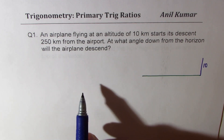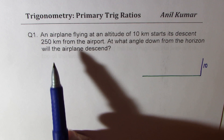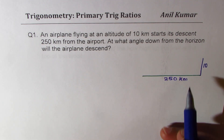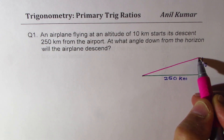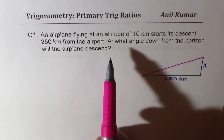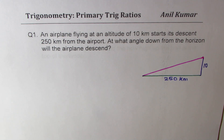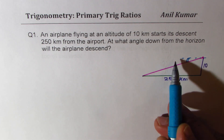It starts to descend 250 kilometers from the airport. Now, when we say 250 kilometers from the airport, that's a huge question and it makes a lot of difference to our solution. Whenever we say distance from the airport, it is always the horizontal distance, unless we say it is a line-of-sight kind of thing. So we'll assume this is the horizontal distance of the plane from the airport, and that is how we are going to solve this.